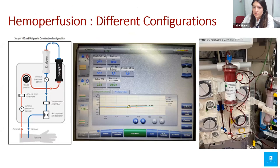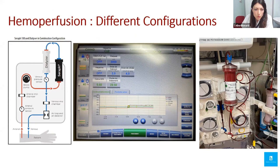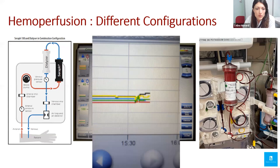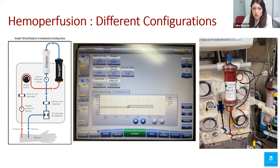In our department, we use CVVHD with citrate-calcium regional anticoagulation, and it works very well with the Seraph. We can insert the cartridge either after treatment has started or before — both work. When inserting during treatment, we observe a small expected increase in pre-filter pressure, followed by stabilization. We observed no modification of citrate-calcium parameters and no problems with earlier circuit failure. The cartridge is positioned between the blood pump and the hemofilter.